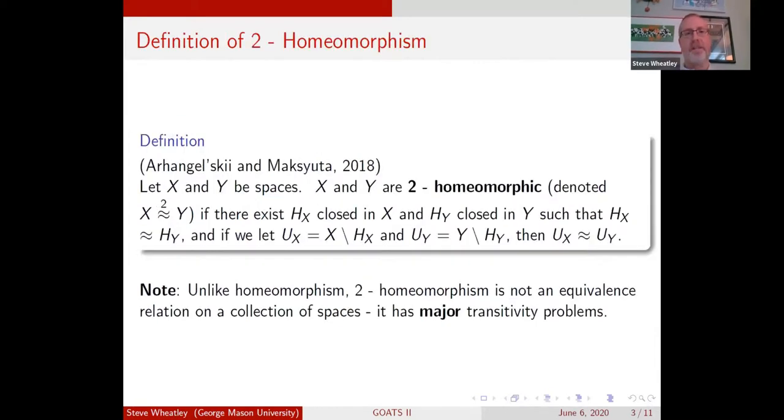Let me tell you what a 2-homeomorphism is. This definition is pretty recent, a 2018 paper by Arkhangel'skii and Maksynta. You've got two spaces. These things are 2-homeomorphic, denoted approximately equals with superscript 2. There's a closed subset of X and a closed subset of Y such that the two closed subsets are homeomorphic to each other, and their open complements U_X and U_Y are also homeomorphic. So you're generalizing homeomorphism. Things that are homeomorphic are certainly 2-homeomorphic, but not vice versa.